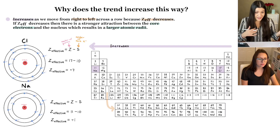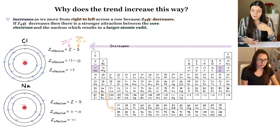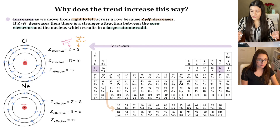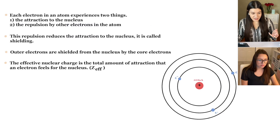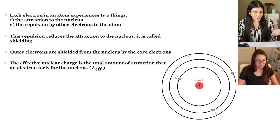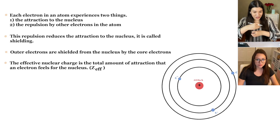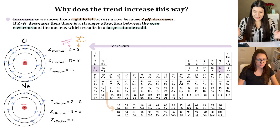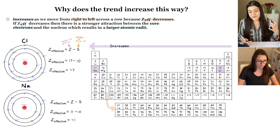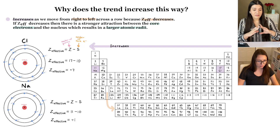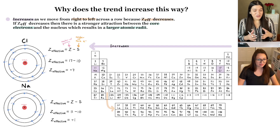The other trend — moving left to right — involves Z effective, which refers to the overall effective nuclear charge felt by an atom's electrons. Z effective is the total attraction an electron feels toward the nucleus, taking into account that electrons are also repelling each other simultaneously. Atomic radius increases from right to left because Z effective decreases, meaning there's a stronger attraction between the core electrons and the nucleus rather than the valence electrons and the nucleus, resulting in a larger atomic radius.